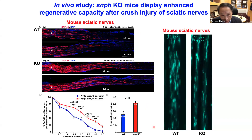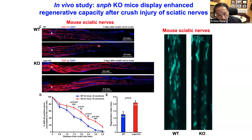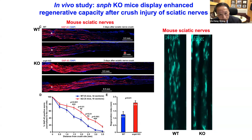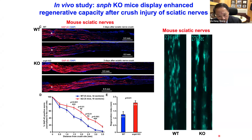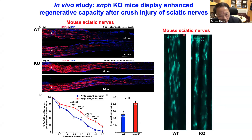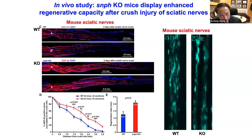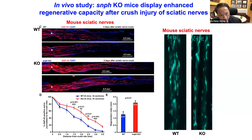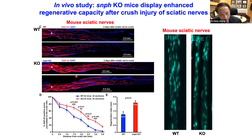We then used the mouse sciatic nerve crush injury model for in vivo regeneration studies. We monitored mitochondrial transport ex vivo and observed that Syntaphilin knockout showed robust axon regrowth and enhanced mitochondrial transport across axon bundles. At three days post-injury, knockout mice showed more axon regrowth, with axons growing much longer compared to wild-type mice.